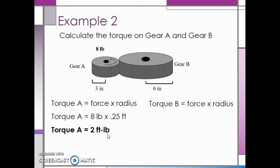On gear B, the force is again 8 pounds, and the radius is 0.5 feet. Therefore, the torque on gear B is 4 foot pounds.